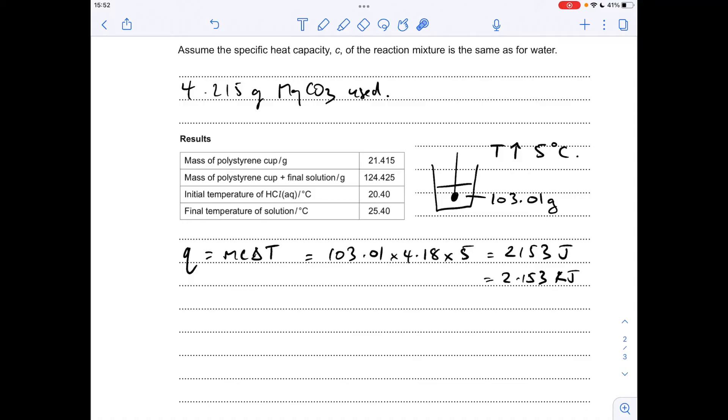So we do that by using the Q equals mc delta T equation. So the mass of the solution was that, specific heat capacity of the solution is 4.18. We're told it's the same as water and the delta T is 5. So it's that many joules, it's that many kilojoules.